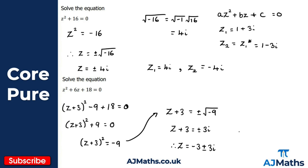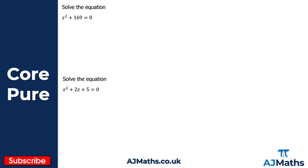We can see the conjugate pair: z₁ = −3 + 3i and z₂ = −3 − 3i. Notice that z₂ is the conjugate of z₁. So that was the two worked examples. Now it's your turn — pause the video and have a go at a couple of practice questions, then we'll take a look at what you should have got.